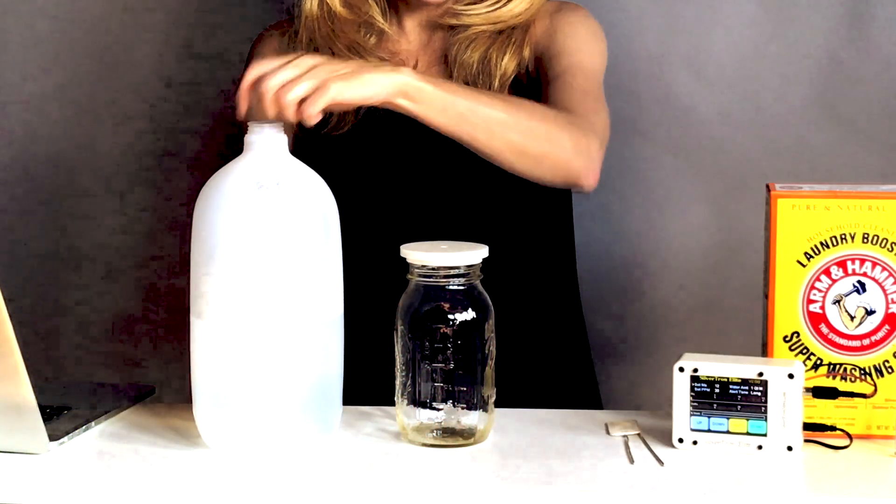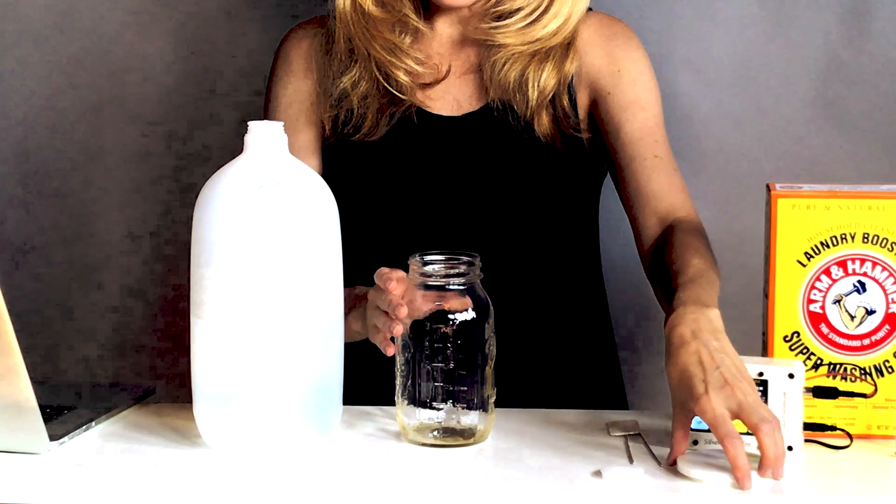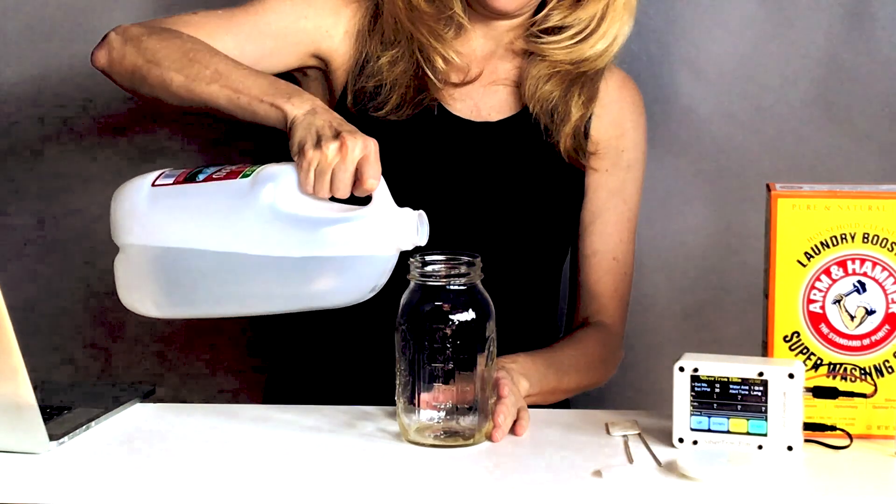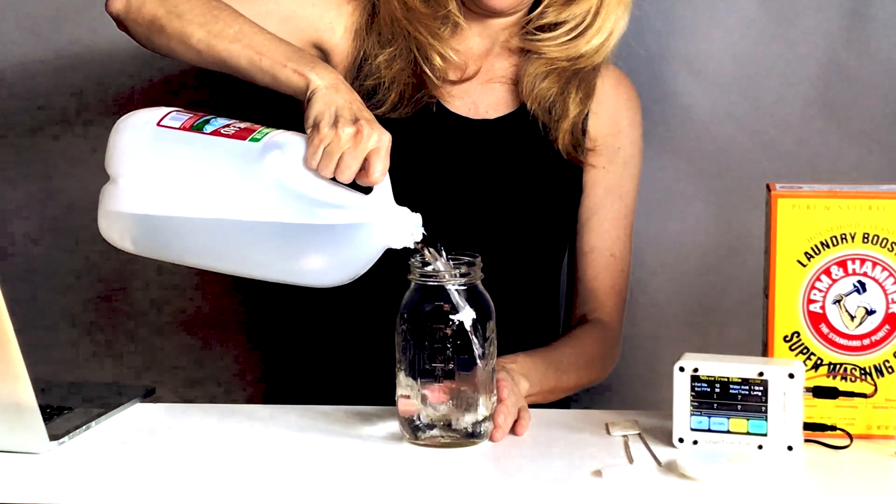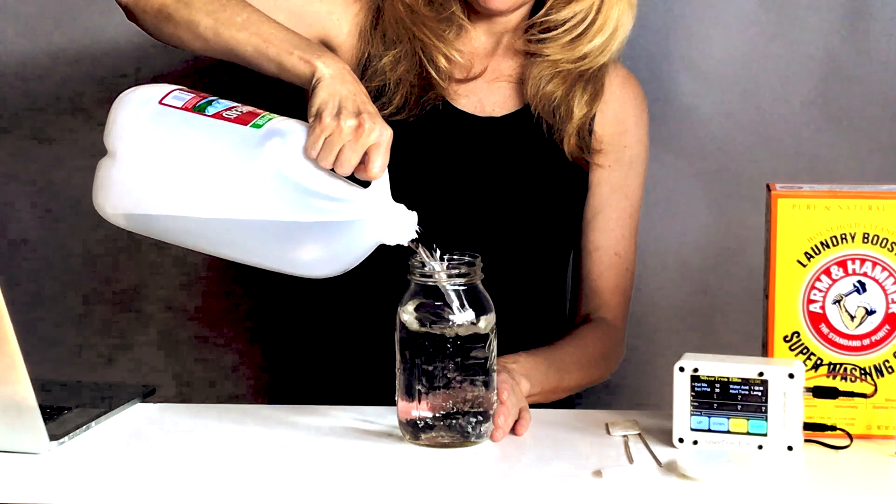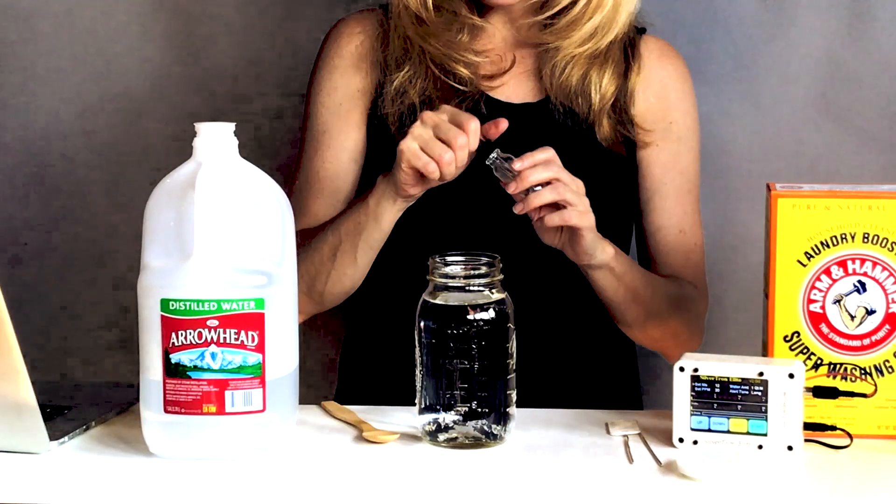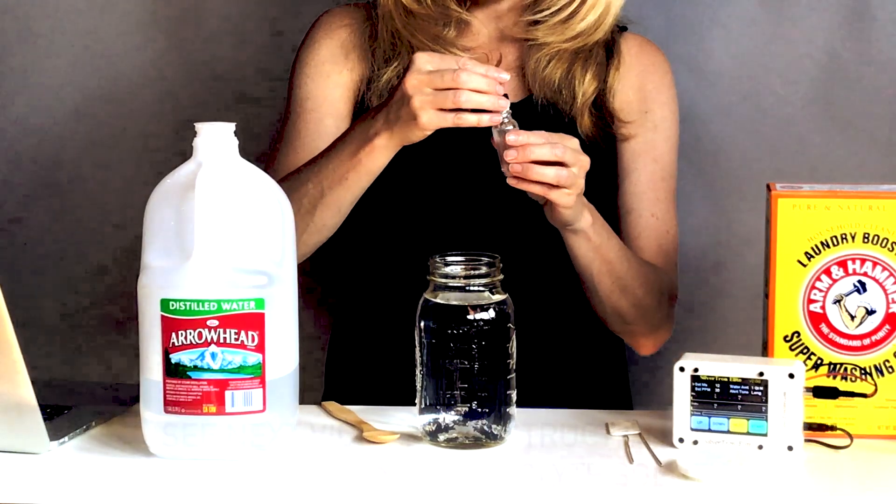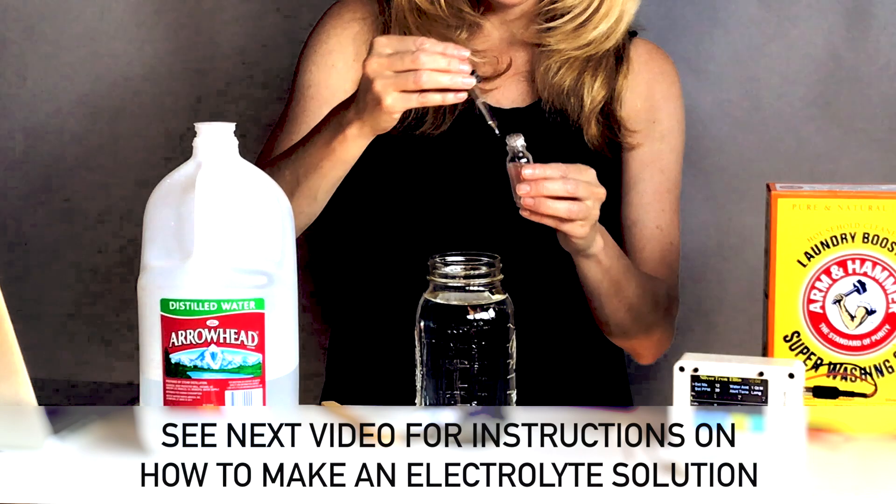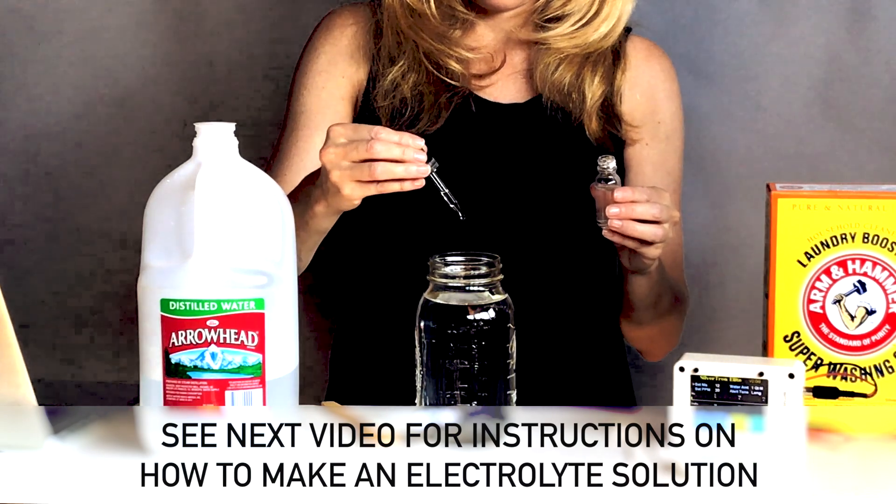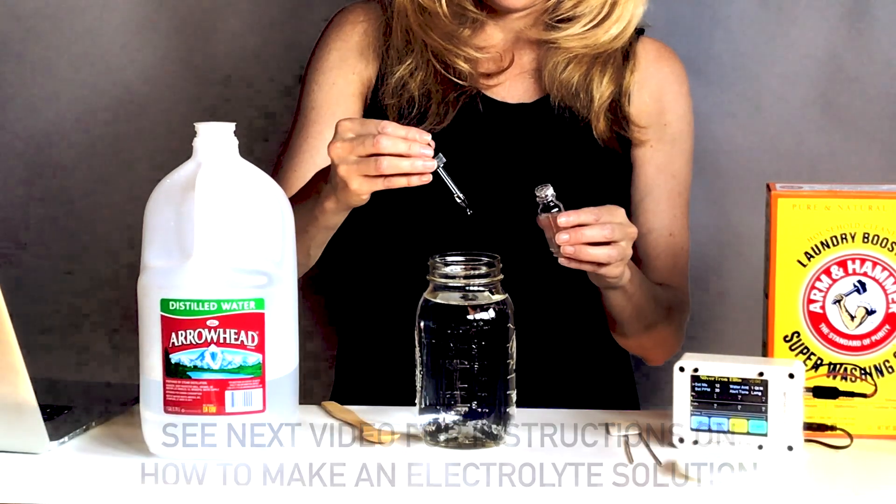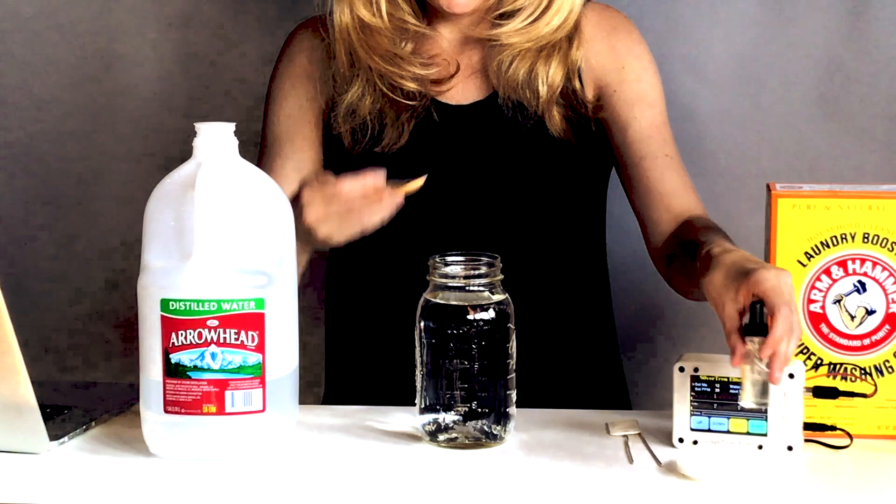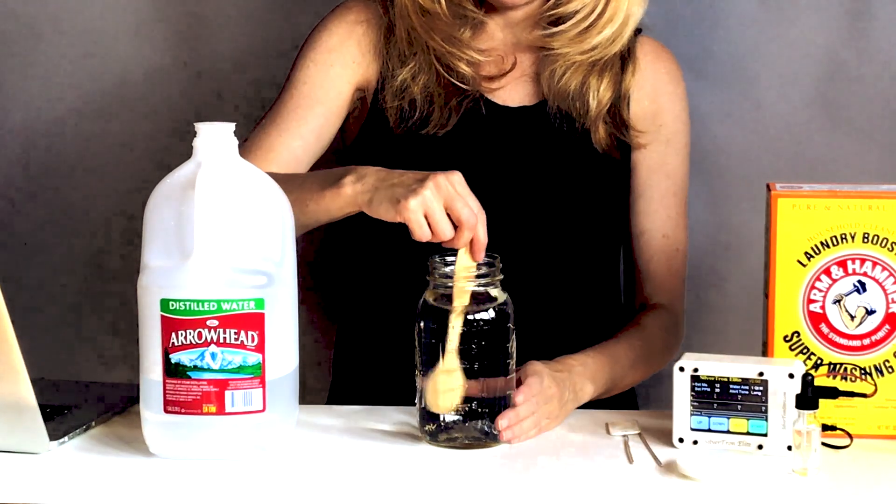To start, I'm going to fill the one quart sterilized mason jar with distilled water. Now I'm going to add 20 drops of this electrolyte solution to my water, and I'm going to stir briskly with a wooden spoon.